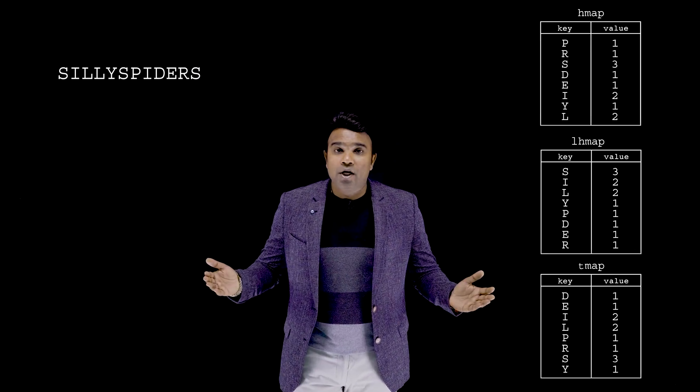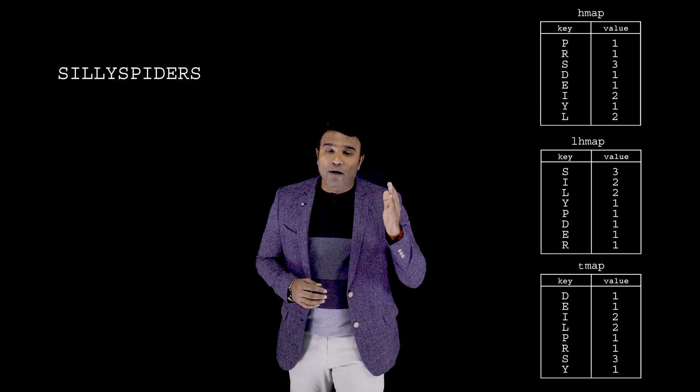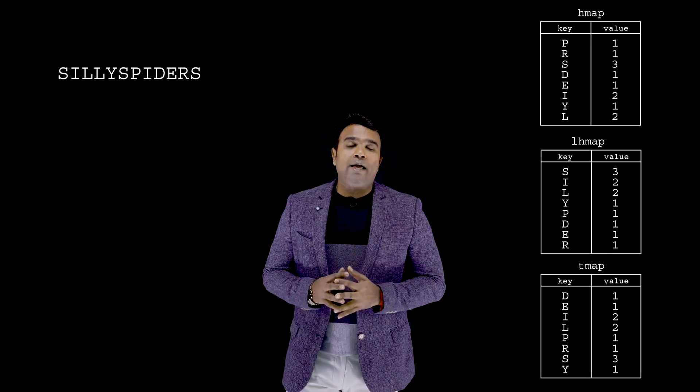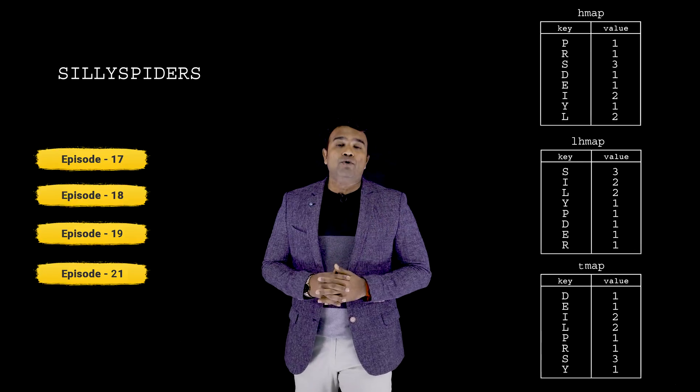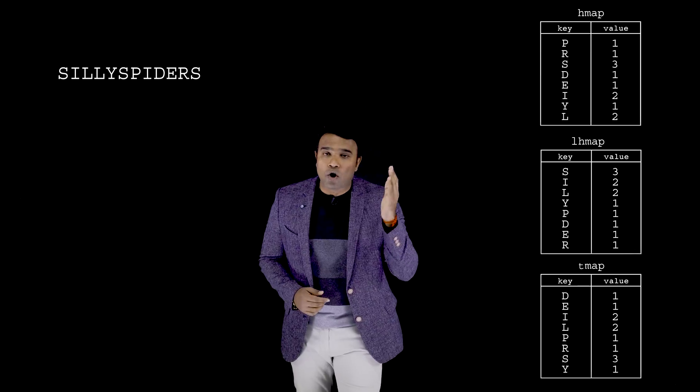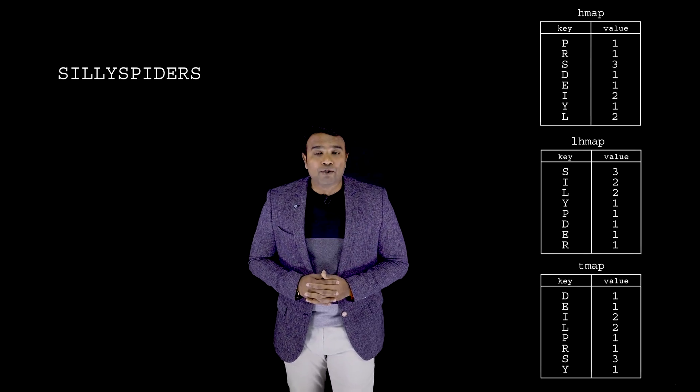Before telling you how the map helps, let's decide which map data structure to use. Java supports three types of maps: HashMap, LinkedHashMap, and TreeMap. Note that this episode is not independent — viewers who have not watched episodes 17, 18, 19, and 21 should watch those first and then come back. For those who have watched them, let's figure out which of these three maps solves this problem.